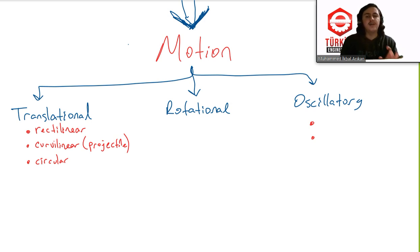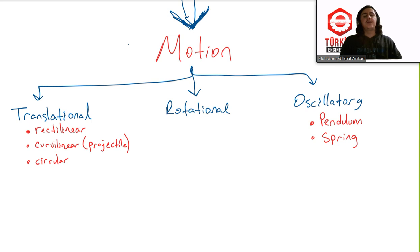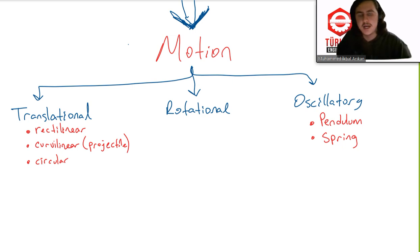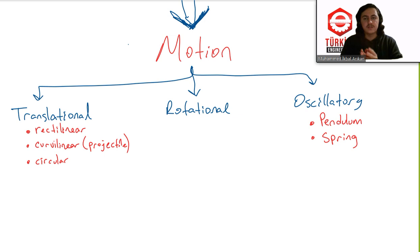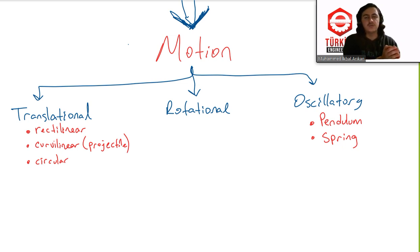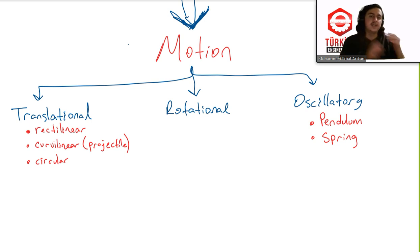Rotational motion has no sub-parts — it is just rotational motion. Oscillatory motion examples include the pendulum and springs. Maybe in this course I will skip oscillatory motion and leave it for college physics, not for this introduction playlist. The main parts of classical mechanics you must understand are the types of translational motion, kinematics of translational motion, and kinetics of translational motion, then move to rotational motion and understand its kinematics and kinetics.